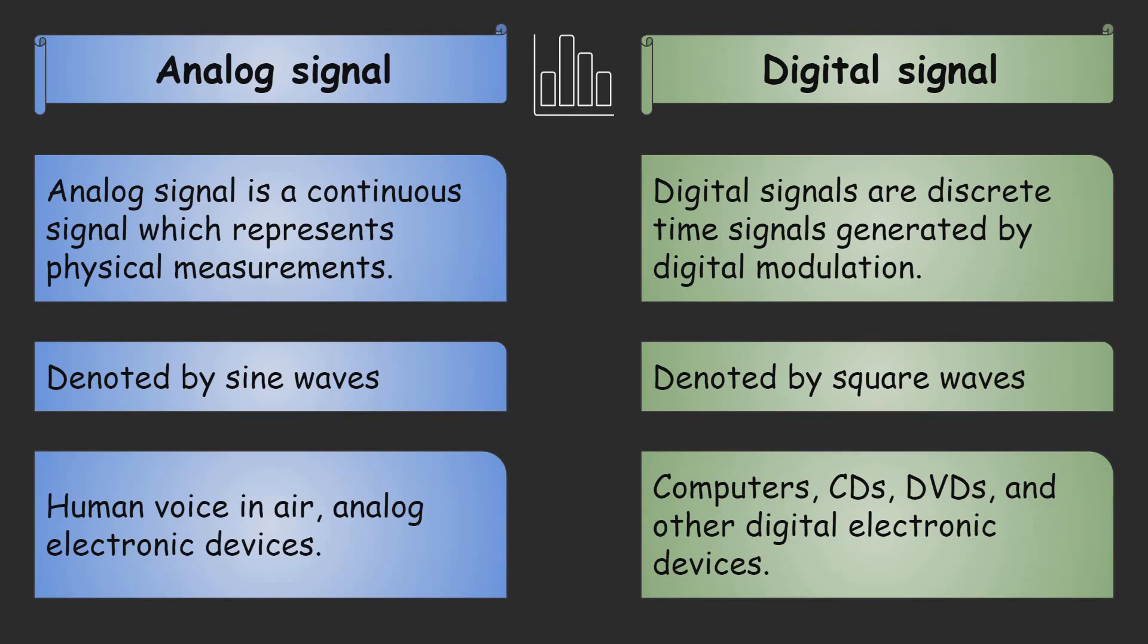Example of digital signal: computer, CD, DVDs. In such digital electronic devices digital signal is used, or you can say these devices work on digital signal.